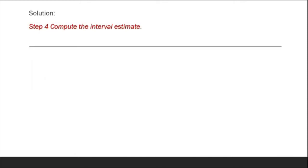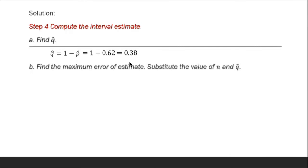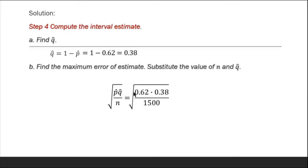Step 4: Compute the interval estimate. Find q-hat as the estimator of population q. So q-hat equals 1 minus p-hat, or 1 minus 0.62, giving q-hat equals 0.38. Next, find the maximum error of estimate by substituting the values of p-hat, q-hat, and n: the square root of 0.62 times 0.38 divided by 1,500, which is approximately 0.013.